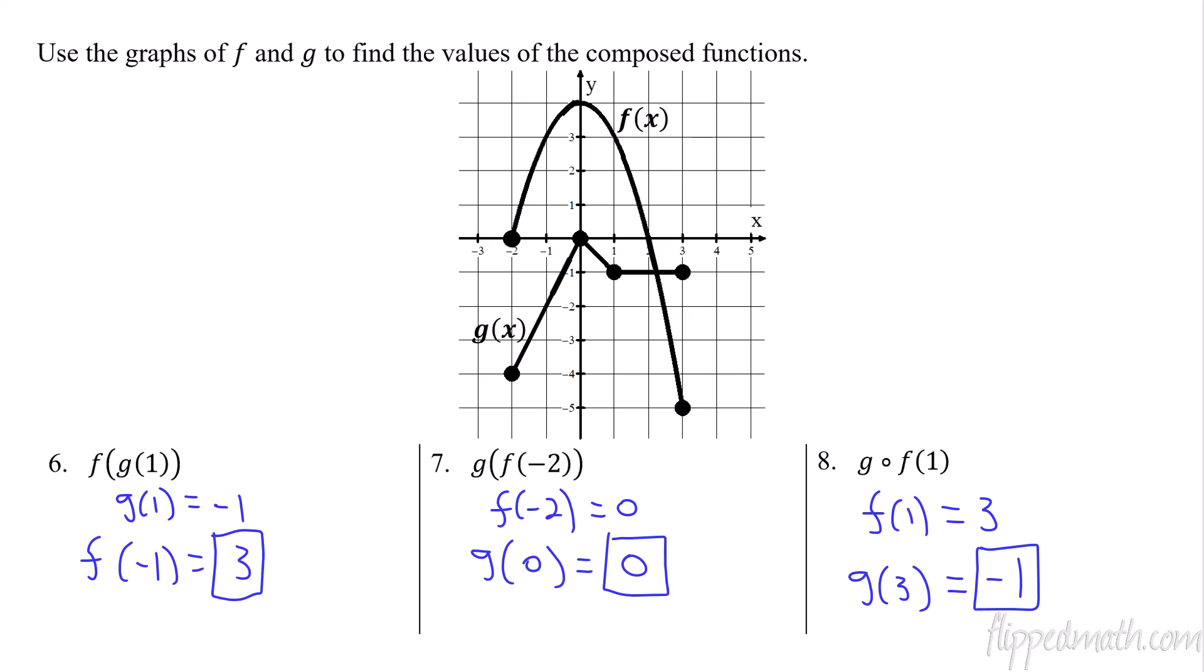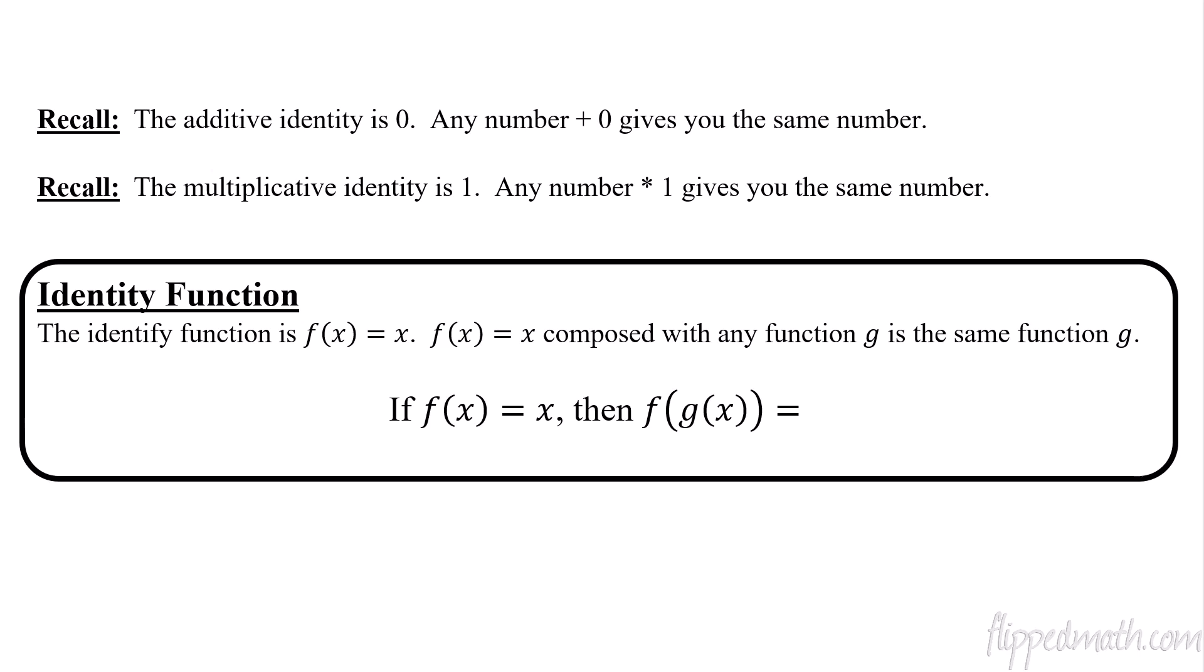Okay, and then the last thing. See, this lesson is pretty quick and easy. The last thing is this thing called the identity function. So before we talk about identity function, let's recall some things that you will probably have heard of before, and that's the additive identity. The additive identity is 0. Why is that? Well, if you take any number and you add 0, you get the identity. You get the same number. So additive identity is 0 because if you add 0, you always get the same thing. The multiplicative identity is 1 because if you take any number and multiply by 1, it gives you the same number. So it's called identity because it gives you the same thing.